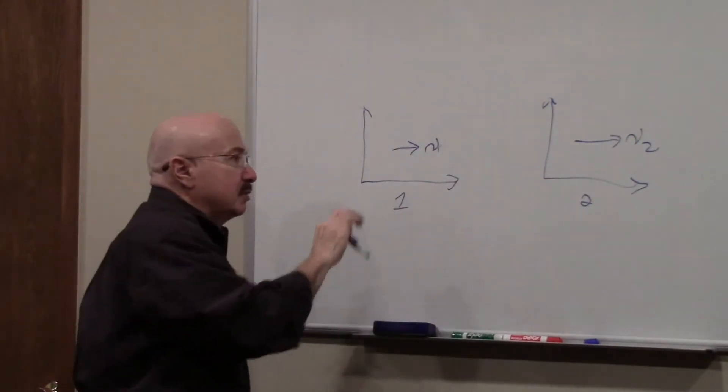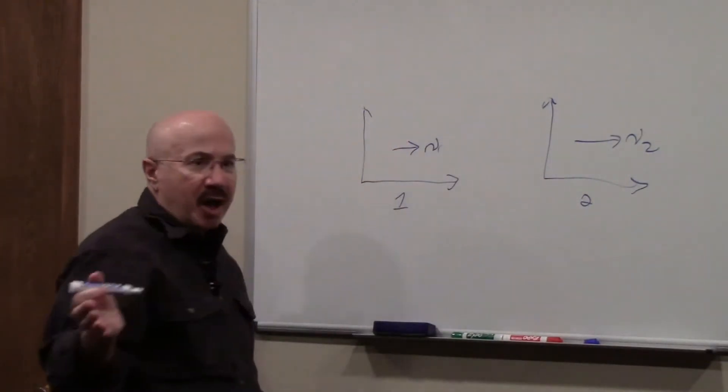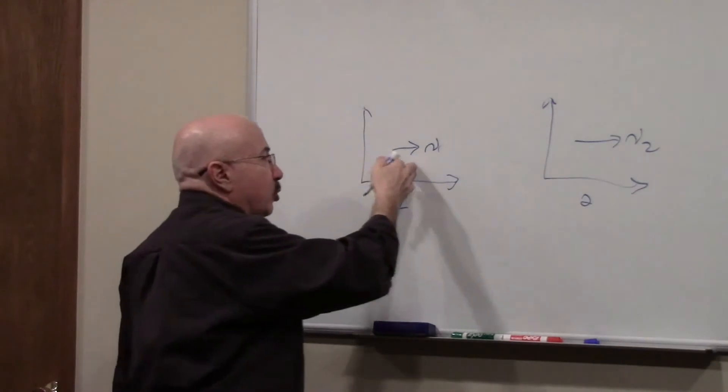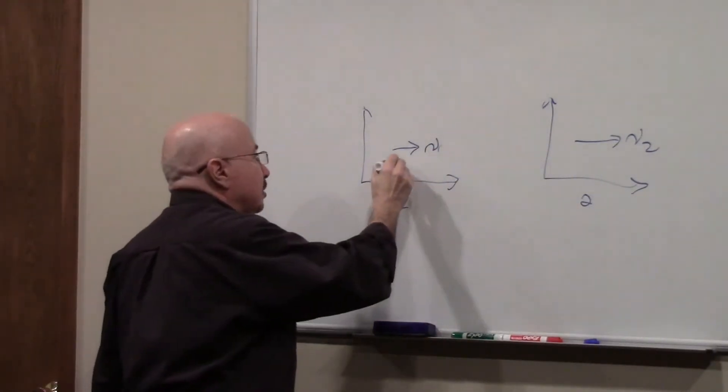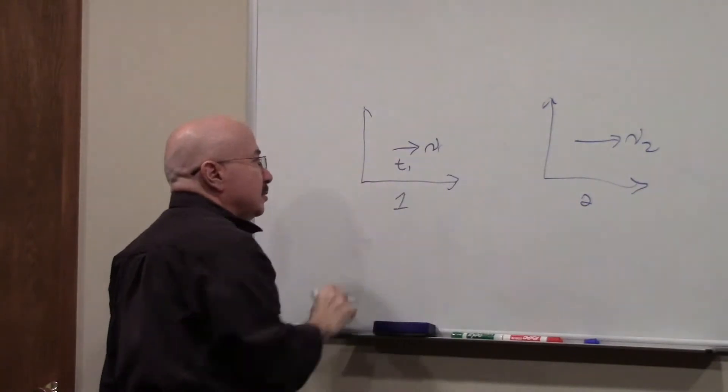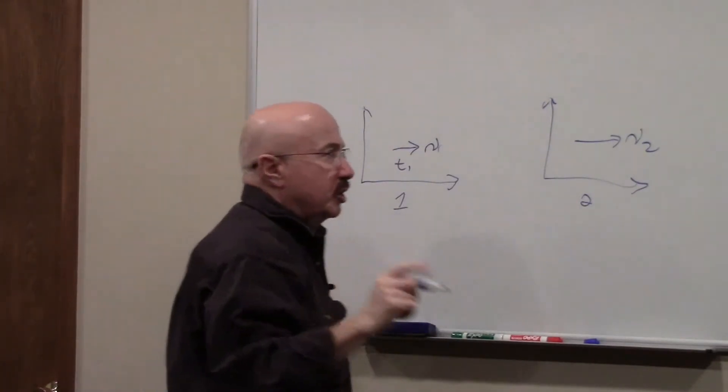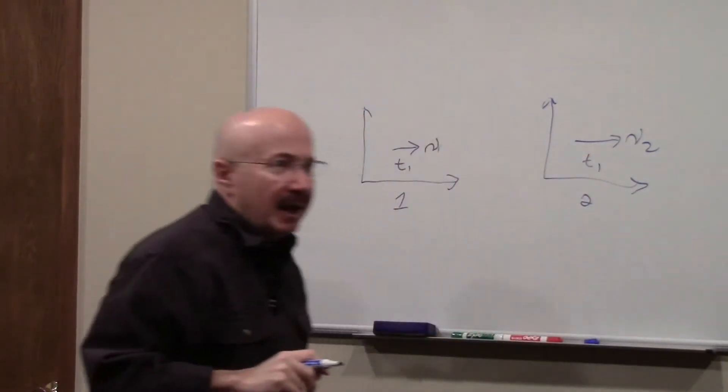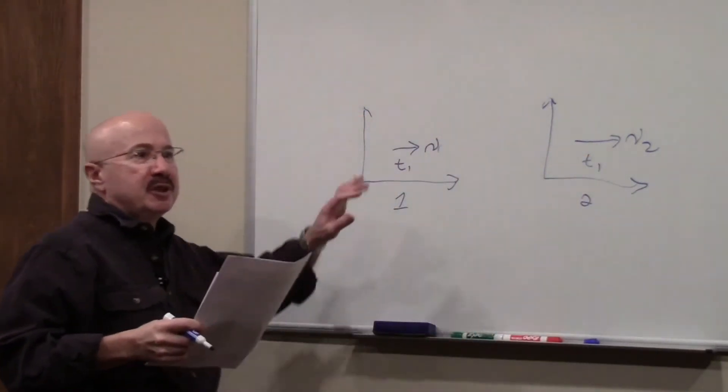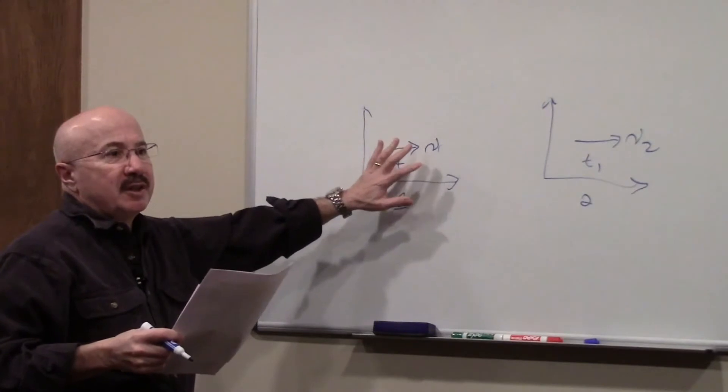How do you transfer a coordinate such as time from one frame to the other? In the Galilean transformation, T1 was assumed to be the same here, and that actually proved to be incorrect.